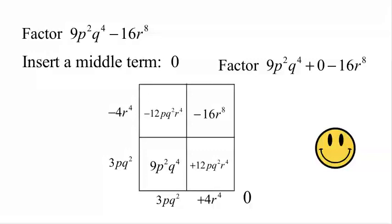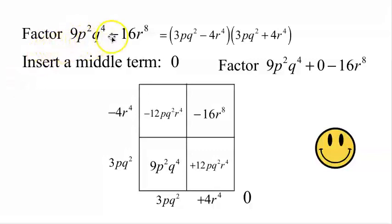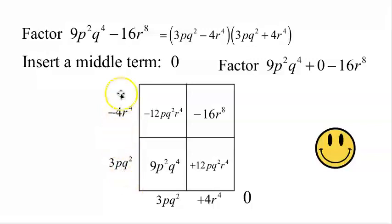We have successfully factored the difference of two squares. The answer is: 9p squared q to the 4th minus 16r to the 8th equals 3pq squared minus 4r to the 4th, times 3pq squared plus 4r to the 4th.